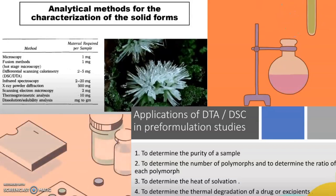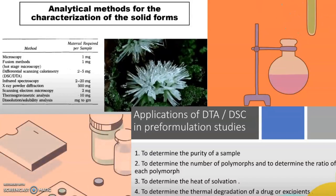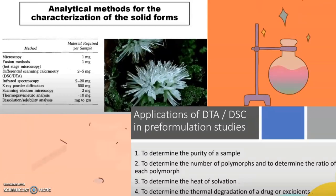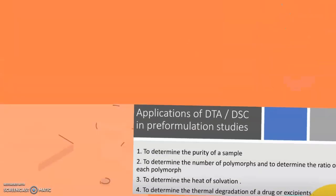The applications of DTA and DSC in pre-formulation studies are to determine the purity of a sample, to determine the number of polymorphs and the ratio of each polymorph, to determine the heat of solvation, and to determine the thermal degradation of a drug or excipient.